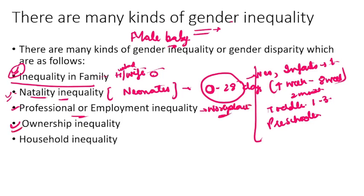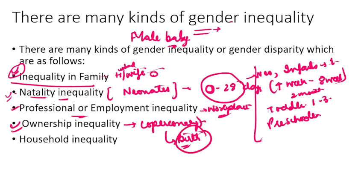Ownership inequality — जैसे पहले Hindu Succession Act में था, coparcenary वाला rule: coparcenary वो right होता है जो लड़के को by birth मिलता है उसके ancestor की property का। पहले यह right लड़कियों को नहीं था। फिर Hindu Succession Act को 2005 में amend किया गया और females को भी coparcener के रूप में add किया गया। Ownership usually घर, गाड़ी, business — सारा husband या male member के नाम पे होता था।